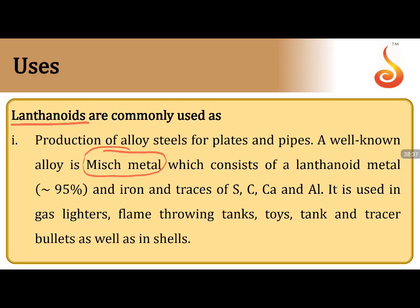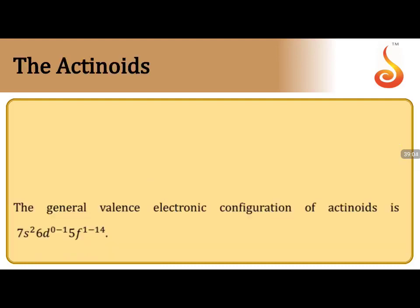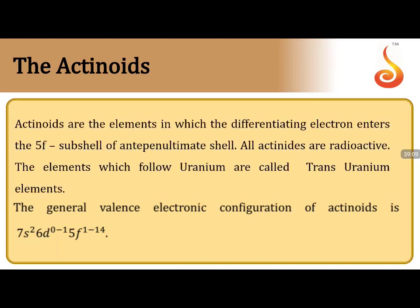A commonly asked topic in examinations is misch metal — a well-known alloy that consists approximately 95% lanthanide metals with trace amounts of iron, sulfur, carbon, calcium, and aluminium. Misch metal is used in gas lighters, flame-throwing tanks, tracer bullets, and toys. Remember the composition of misch metal.